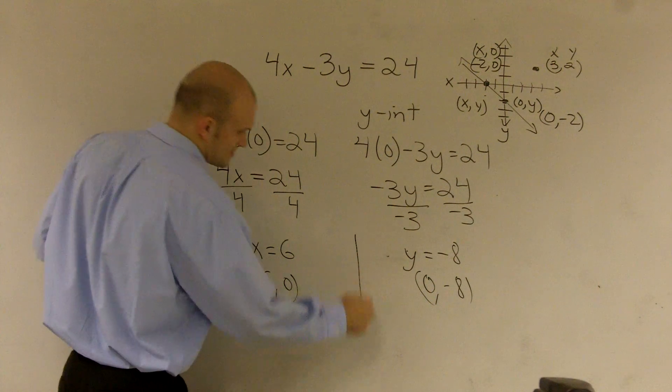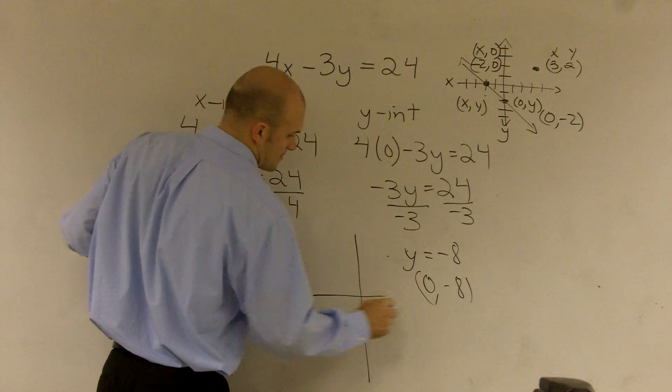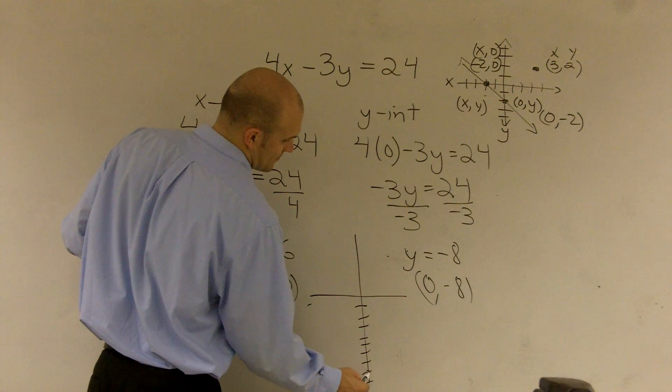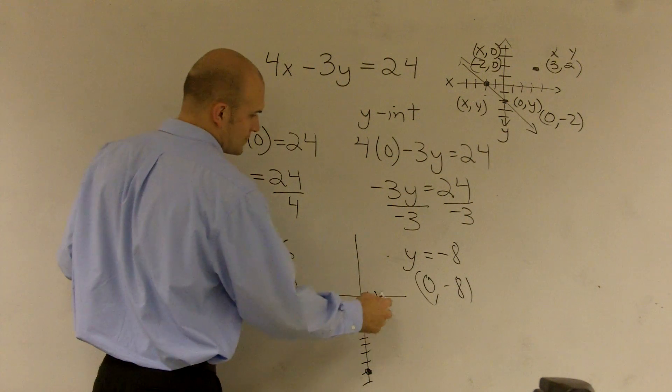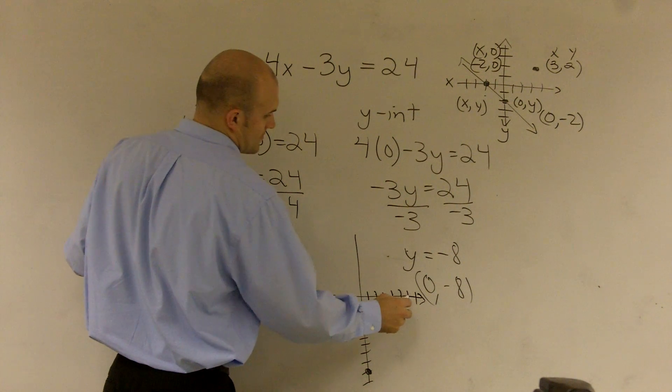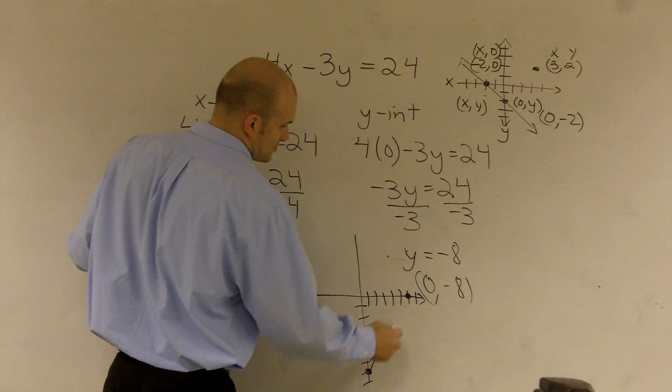And if I want to graph this, negative 8 is 1, 2, 3, 4, 5, 6, 7, 8. And x equals 6, 1, 2, 3, 4, 5, 6. And you just connect the two points.